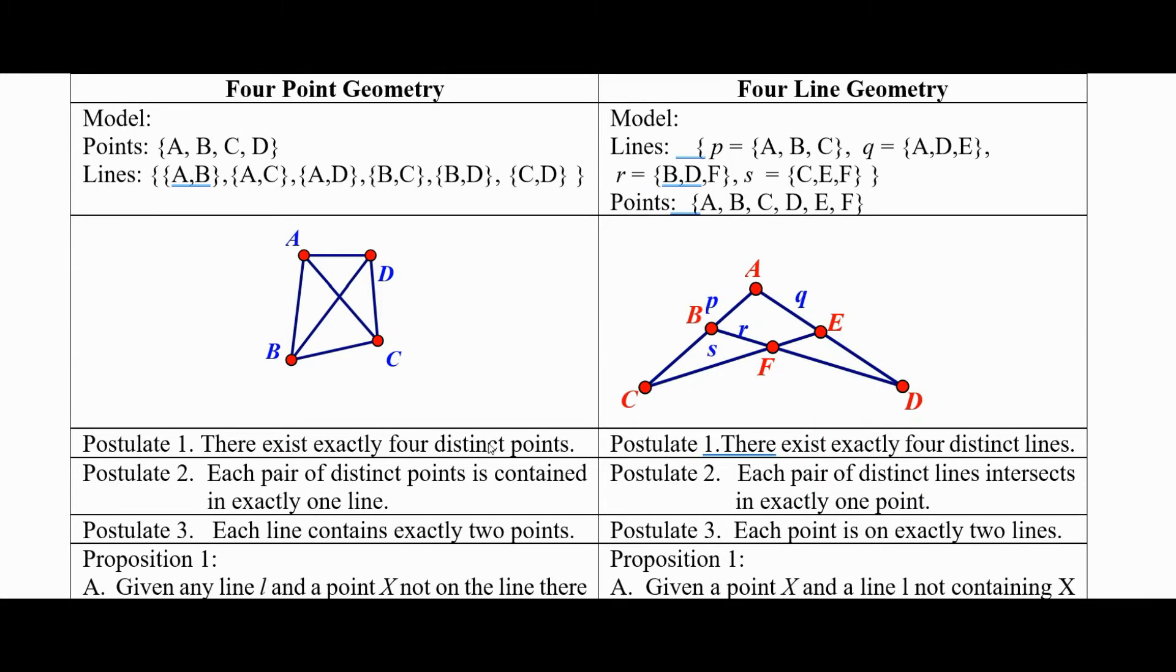And we can see that everything will kind of transfer over sort of backwards way. So in postulate one over here, is there exists exactly four points. That translates over here to there exists exactly four lines.